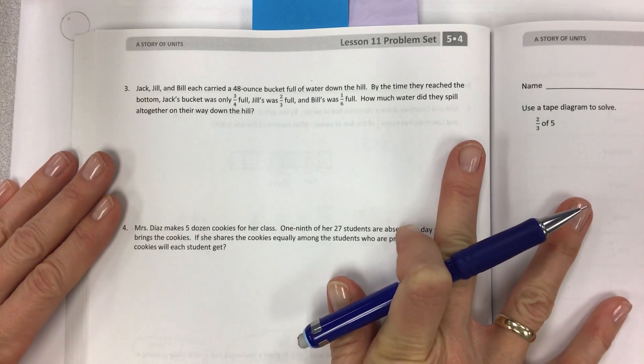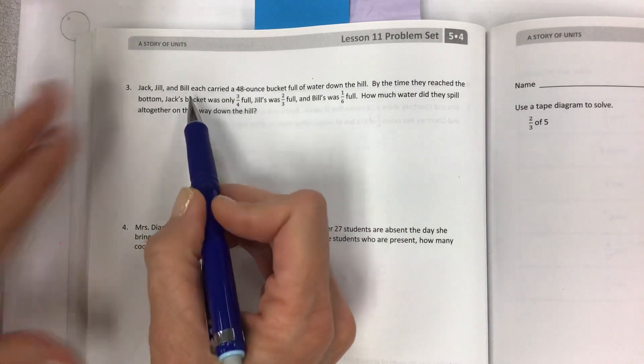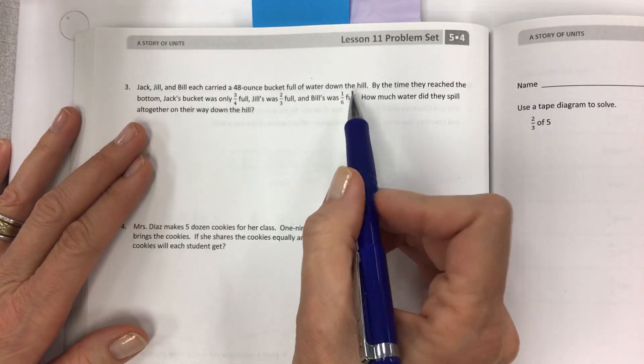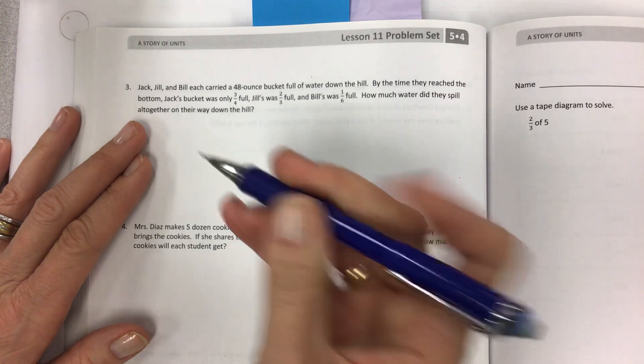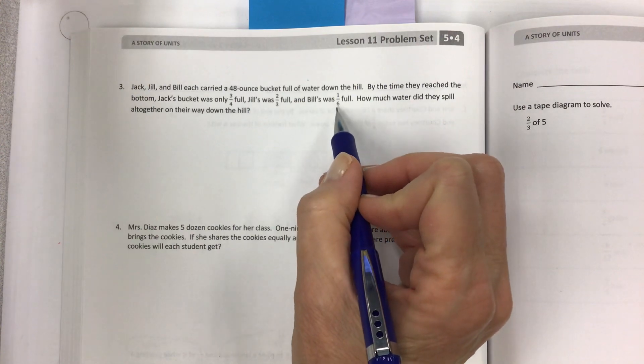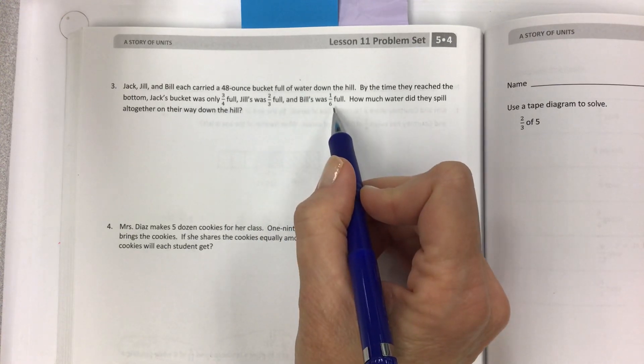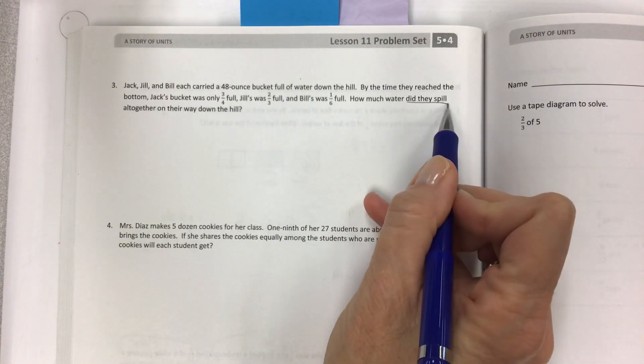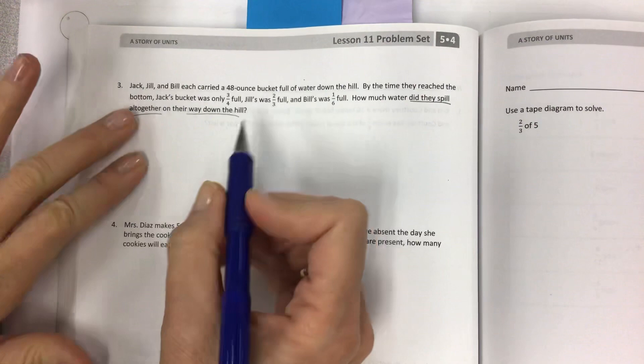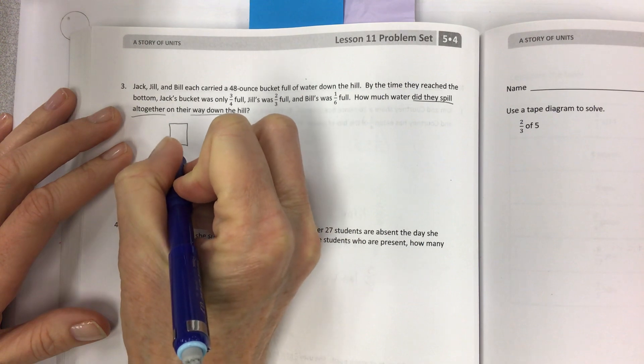Let's turn the page. This one's fun. Jack, Jill, and Bill. They are carrying, each of them is carrying a 48 ounce bucket full of water down the hill. By the time they reached the bottom, Jack's bucket was only three-fourths full. Jill's was two-thirds full. And poor Bill, he must have fallen down because he only has one-sixth full left. But the question is not how much water is in the buckets. Notice that it says how much water did they spill all together on their way down the hill.